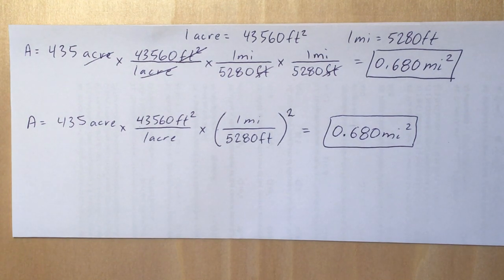So if you look at the second line there, I've reduced the problem to squaring the conversion factor. So I want to emphasize that you have to square the entire conversion factor, not just the unit portion, because sometimes we forget to square the 1 and the 5280.